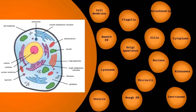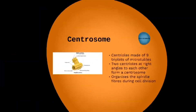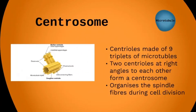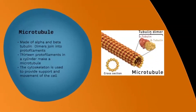A microtubule is made up of alpha and beta tubulin, which form dimers, and these then form protofilaments. Thirteen protofilaments in a cylinder make a microtubule. Microtubules are super important in performing lots of different functions within the cell — they help movement around the cell and also provide support. You can think of microtubules like wires or a highway within the cell — they help things move, allow the cell to keep its structure, and can pull things within the cell. This will be important when we talk about cell division.